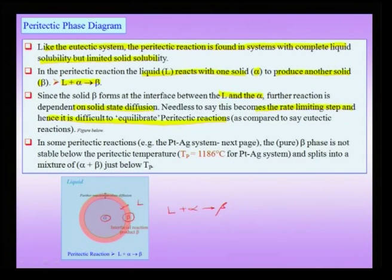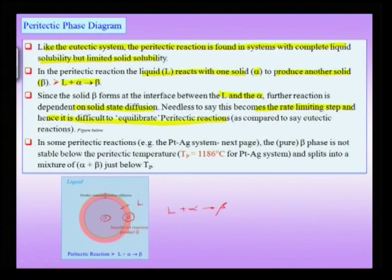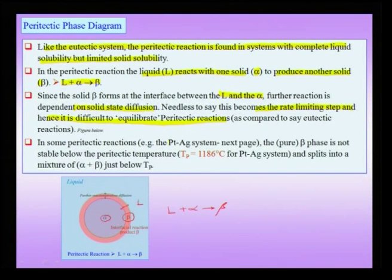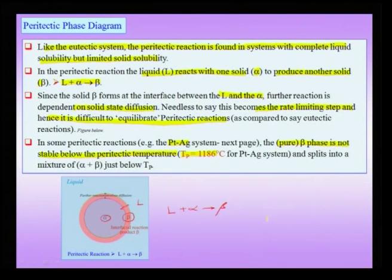Solid-state diffusion becomes the rate-limiting step, so studying a peritectic system requires sufficient time to reach equilibrium. One such system is the lead-platinum-silver system, where the pure beta phase is not stable below the peritectic temperature. We will describe this further when considering the next slide. The peritectic temperature happens to be about 1186°C, and just below it the beta phase splits into a mixture of alpha plus beta.